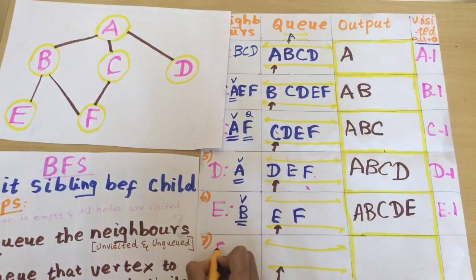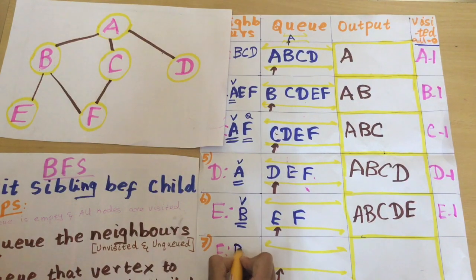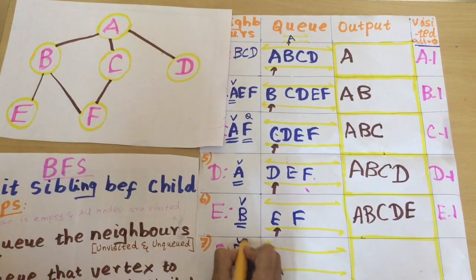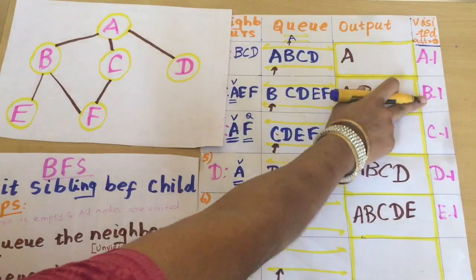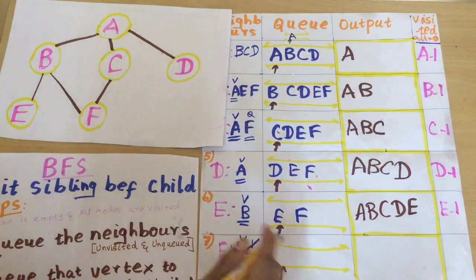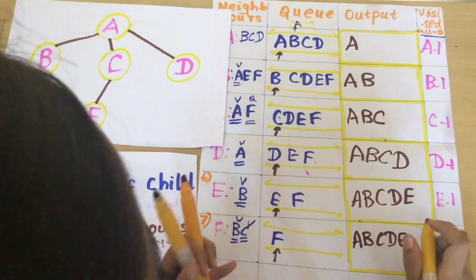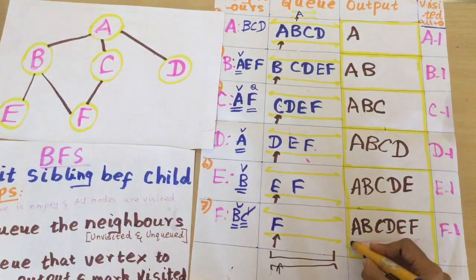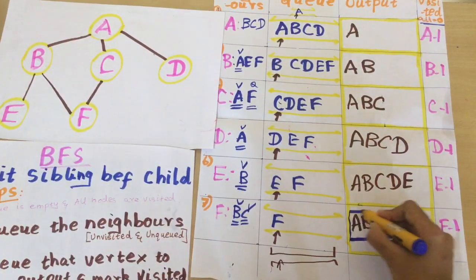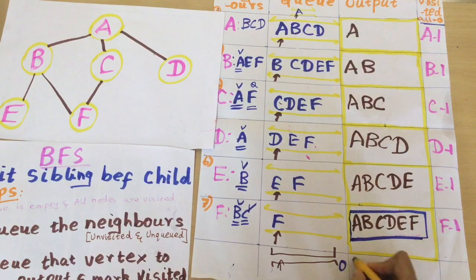The next node is F. The neighbors of F are B and C. I am checking their status - both B and C are already visited. So I need not enqueue them into the queue. I can dequeue F to the output and mark it as visited.